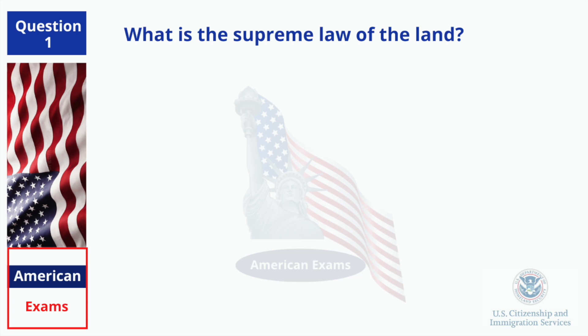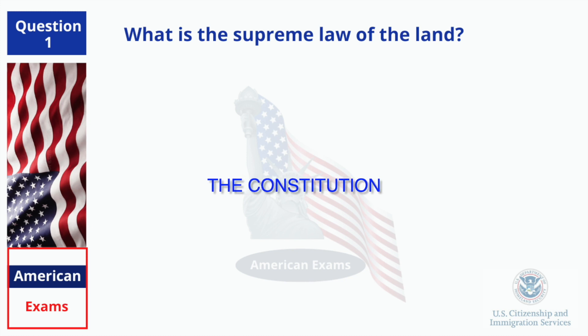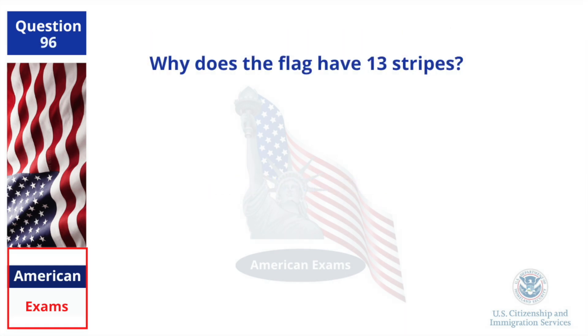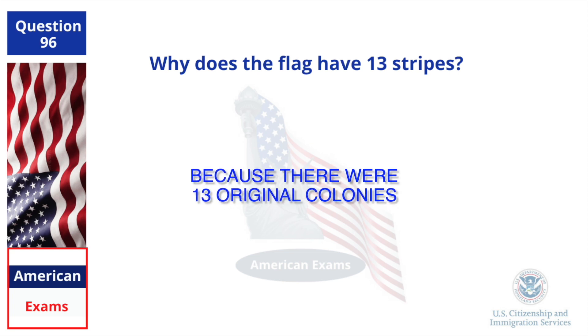What is the Supreme Law of the Land? The Constitution. Why does the flag have 13 stripes? Because there were 13 original colonies.